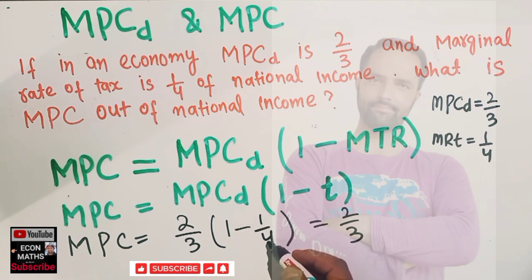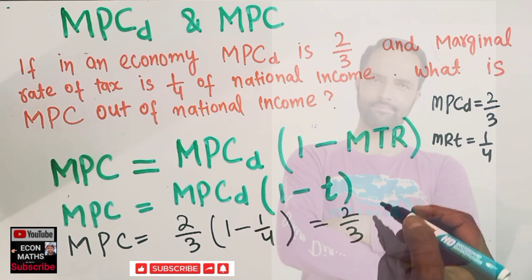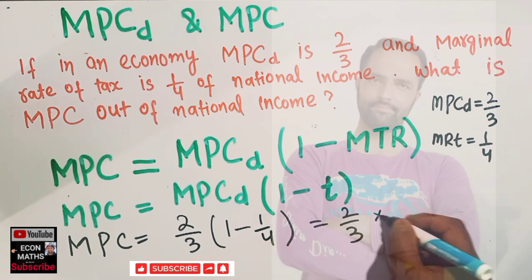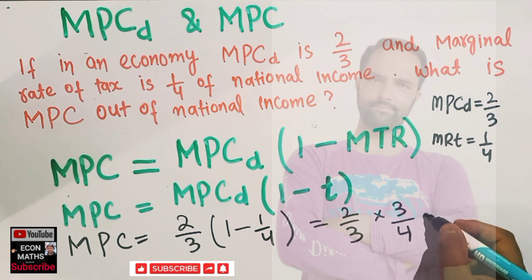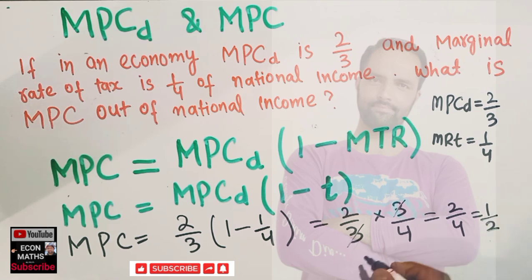So 2/3 times 3/4: the 3 and 3 gets canceled, we have 2/4, which gives us 1/2, which equals 0.5. That means our marginal propensity to consume out of national income is equal to 0.5.